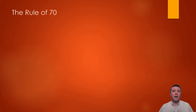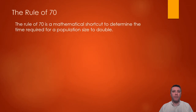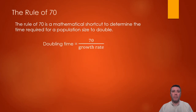An important and easy-to-understand measure of population growth is the amount of time it takes for a population to double in size. A clever trick common in mathematics and finance is called the rule of 70. While there are variations of this rule, like the rule of 72 and the rule of 69.3, the rule of 70 is much easier to work with. To determine a population's doubling time, you simply divide 70 by that population's annual growth rate as a percentage.